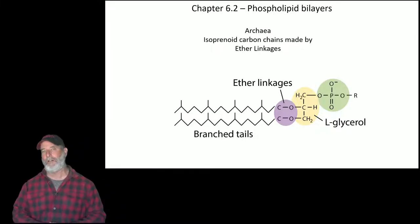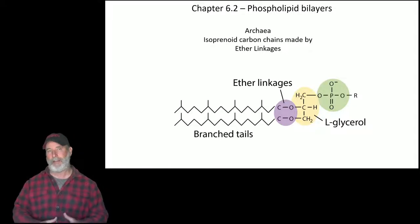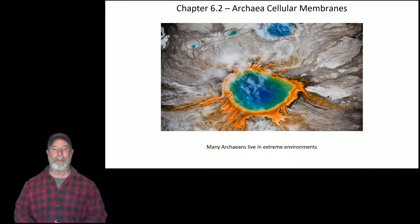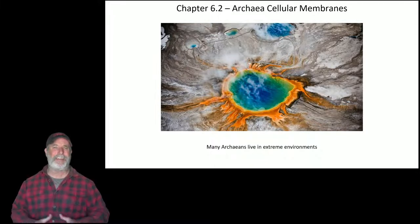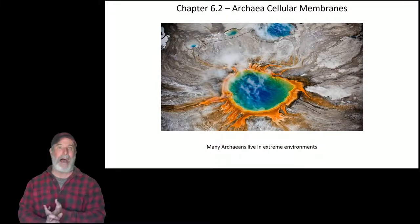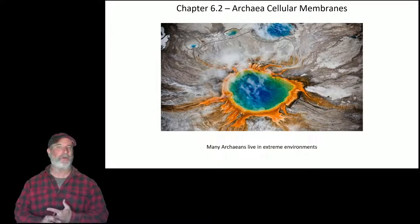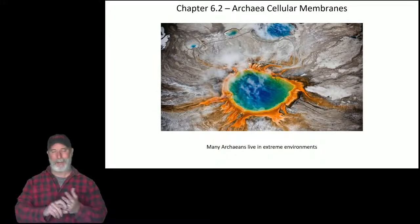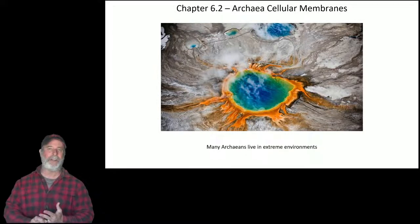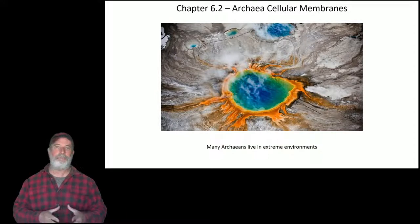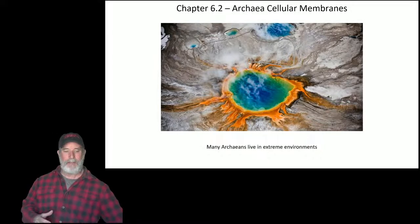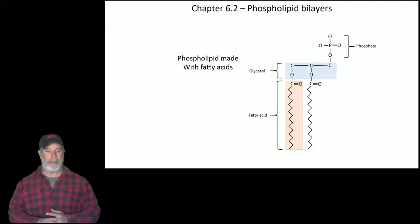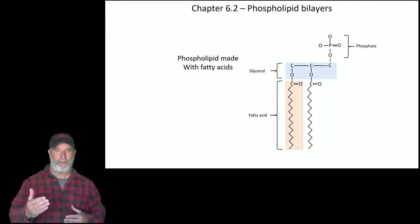These ether linkages and branched isoprenoid tails make the molecule very strong. As a result, many Archaea are extremophiles — they love extreme environments. There are Archaea that can survive in pH as low as battery acid, frozen in Antarctic rocks, and even in boiling water. Part of the reason they survive in such harsh environments is because of those isoprenoid tails with the ether linkage.